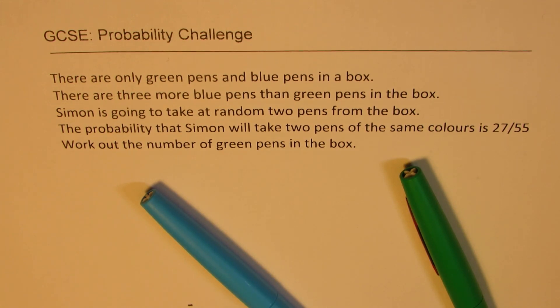The question here is: there are only green pens and blue pens in a box. There are three more blue pens than green pens in the box. Simon is going to take at random two pens from the box. The probability that Simon will take two pens of the same color is 27 over 55. Work out the number of green pens in the box.